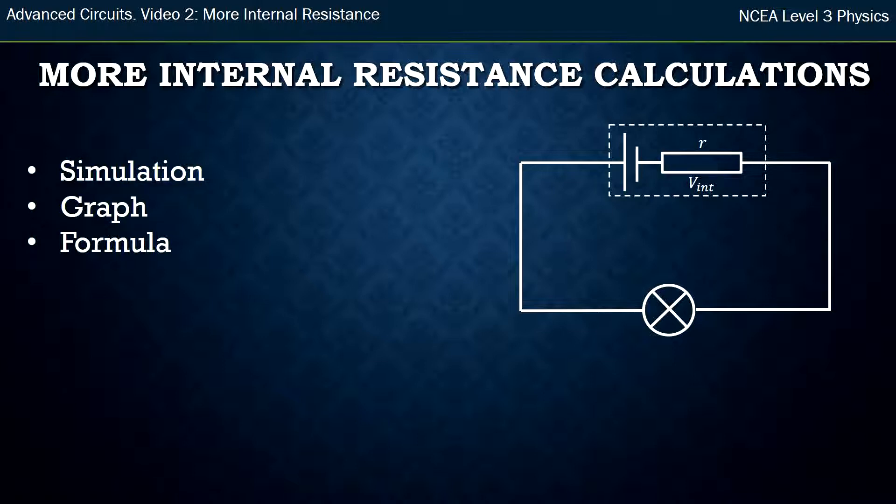So I'm going to start with another simulation, graph the data from that, and come up with a formula. What I want to show you is that in the first video on internal resistance, we talked about what voltage was being lost with the internal resistor. I want to show that value is not the best value to get. What we really want is the resistance of that internal resistor, little r, that I've got on the diagram there.